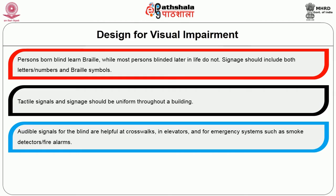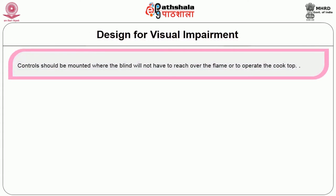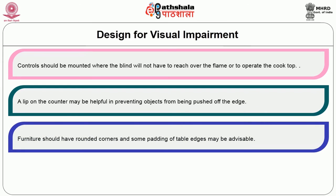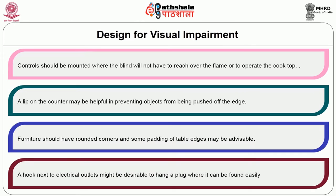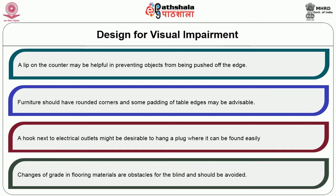To be useful, tactile signals and signage should be uniform throughout a building. Audible signals for the blind are helpful at crosswalks, in elevators, and for emergency systems such as smoke detectors and fire alarms. Gas cook tops tend to be better for the blind because the gas makes a sound as it burns; electric elements retain heat after they are turned off, which can be dangerous. Controls should be mounted where the blind will not have to reach over the flame to operate the cooktop. A lip on the counter may be helpful in preventing objects from being pushed off the edge. Furniture should have rounded corners, and some padding of table edges may be advisable. Hooks next to electrical outlets might be desirable to hang a plug where it can be found easily. Changes of grade in flooring materials are obstacles for the blind and should be avoided.